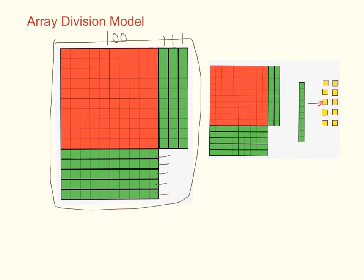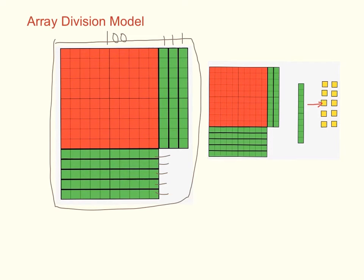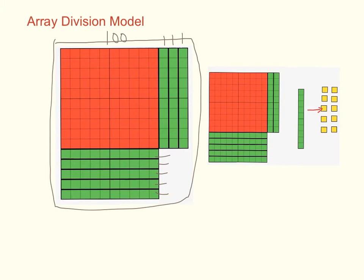So take a look at this. What if I were to trade in one of my longs for 10 ones? Then I would be able to take these ones and I could actually move them over here and then maybe make a perfect rectangle. So let's try that.